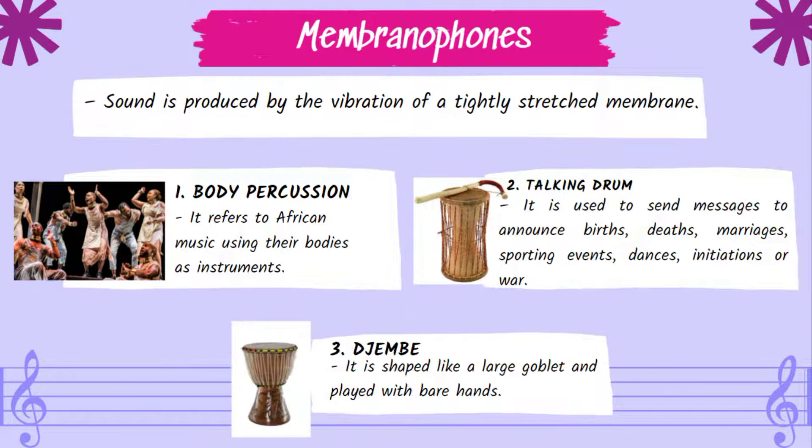Membranophones: sound is produced by the vibration of a tightly stretched membrane. Three examples are: First, Body percussion — Africans using their own bodies as instruments. Second, Talking drum — used to send messages announcing births, deaths, marriages, sporting events, dances, initiations, or war. Third, Djembe — shaped like a large goblet and played with bare hands.